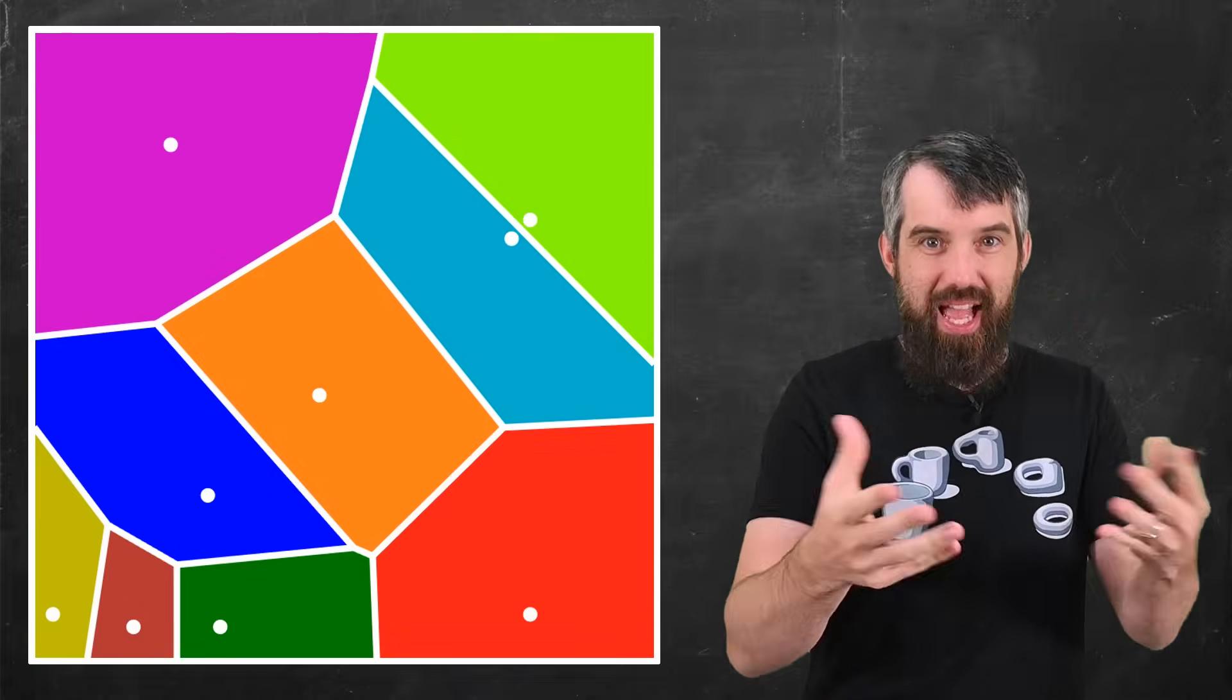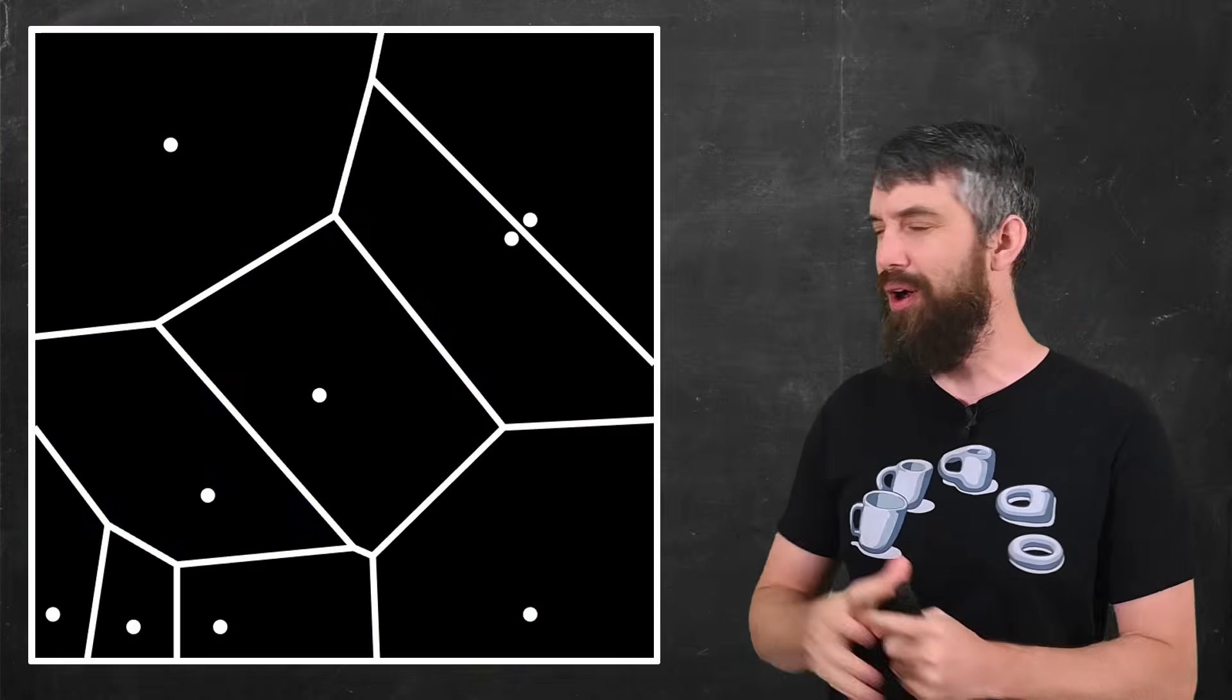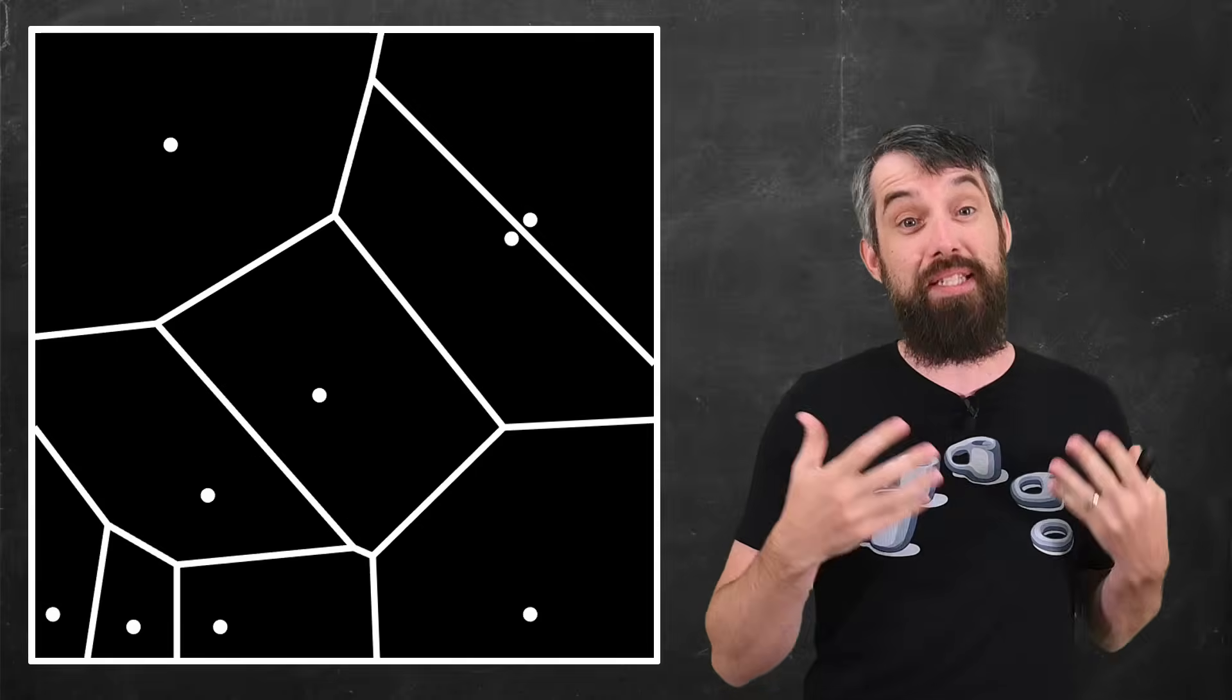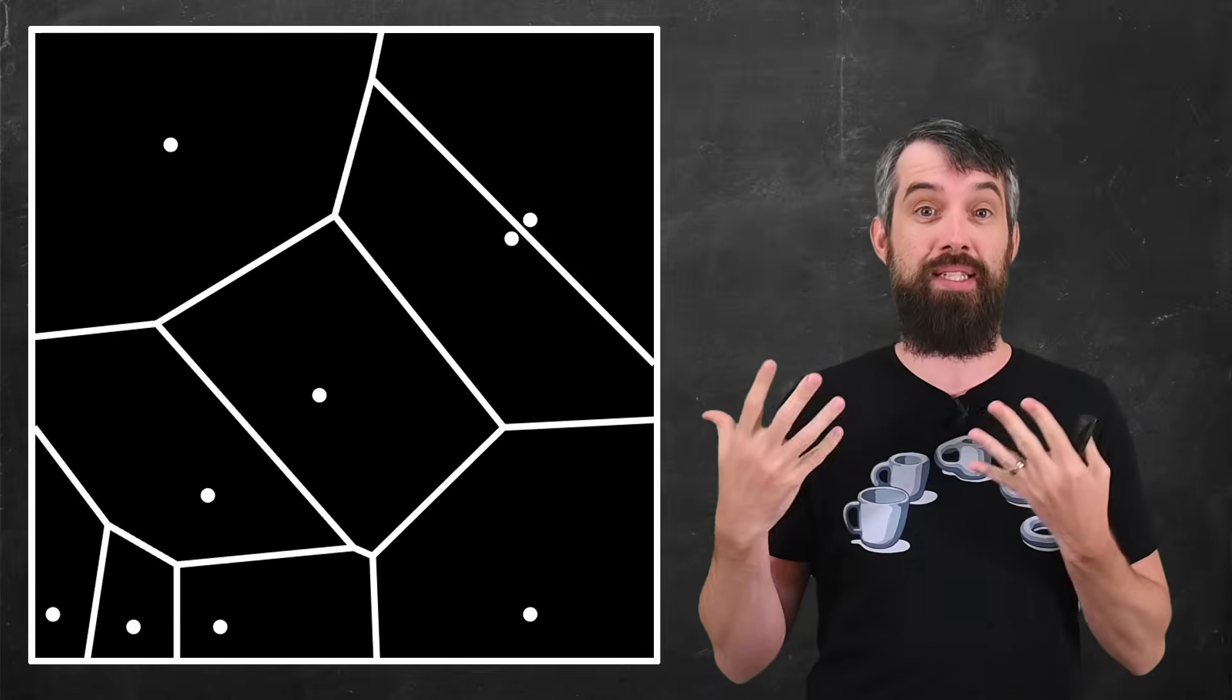If you wish, you could emphasize those boundaries, those lines. And if I remove the color, a diagram like this is typically what we call a Voronoi cell diagram.